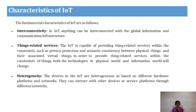First is interconnectivity — IoT can be interconnected with communication infrastructure with global information. Things-related services: these provide constraints like privacy protection and semantic consistency between virtual and physical things. In order to provide these things-related services within the constraints of things, it proposes technologies in both the physical world and the information world.